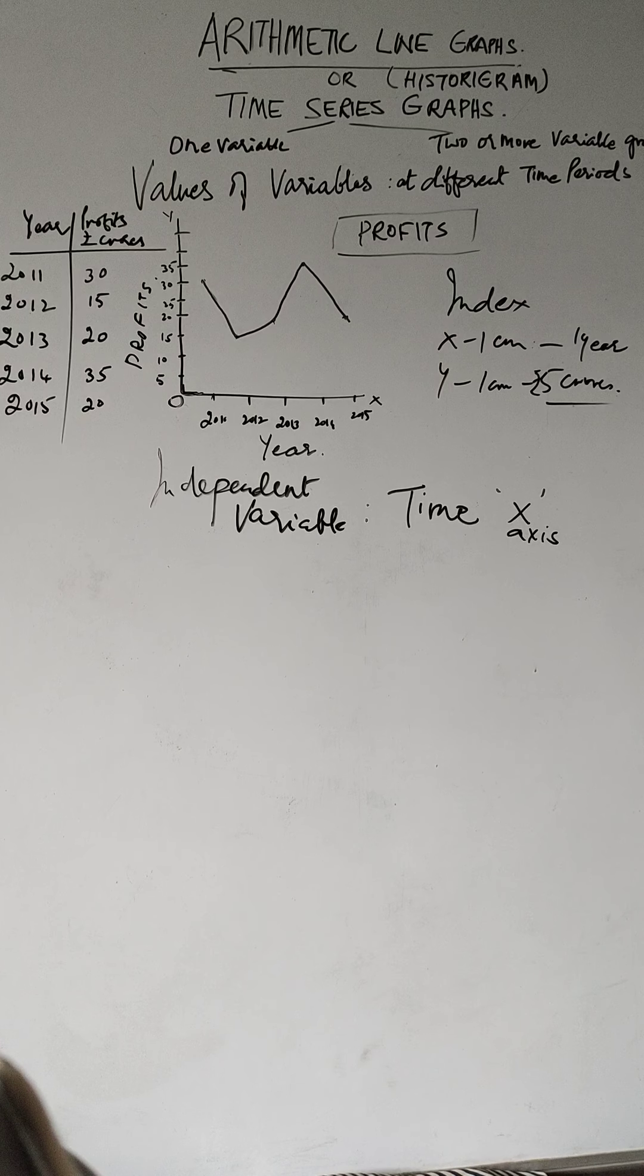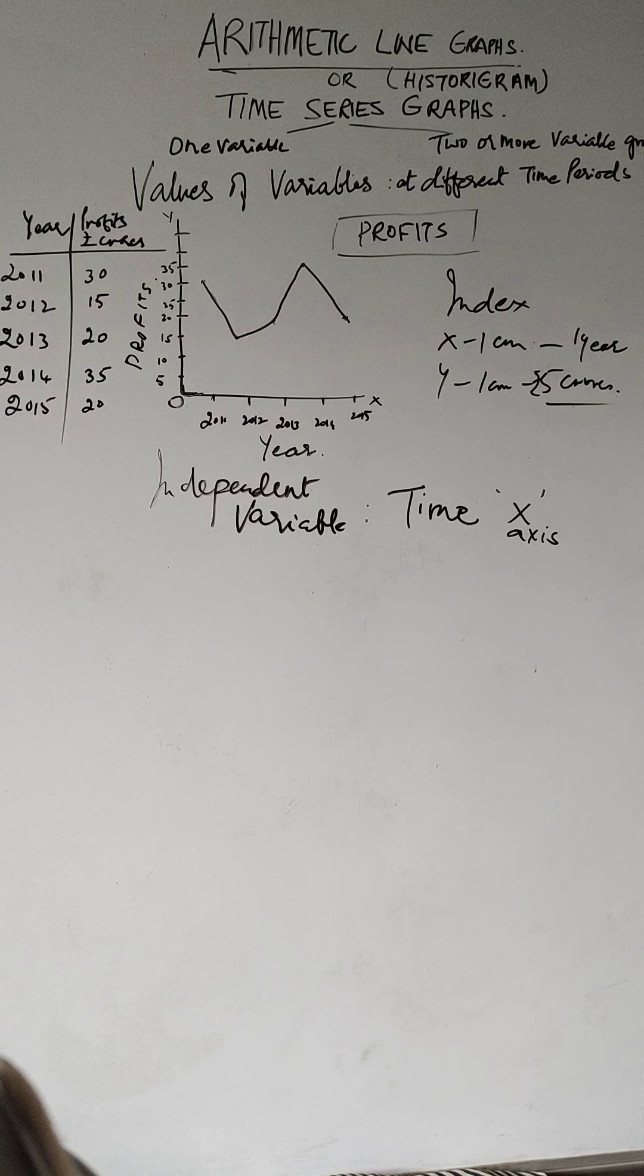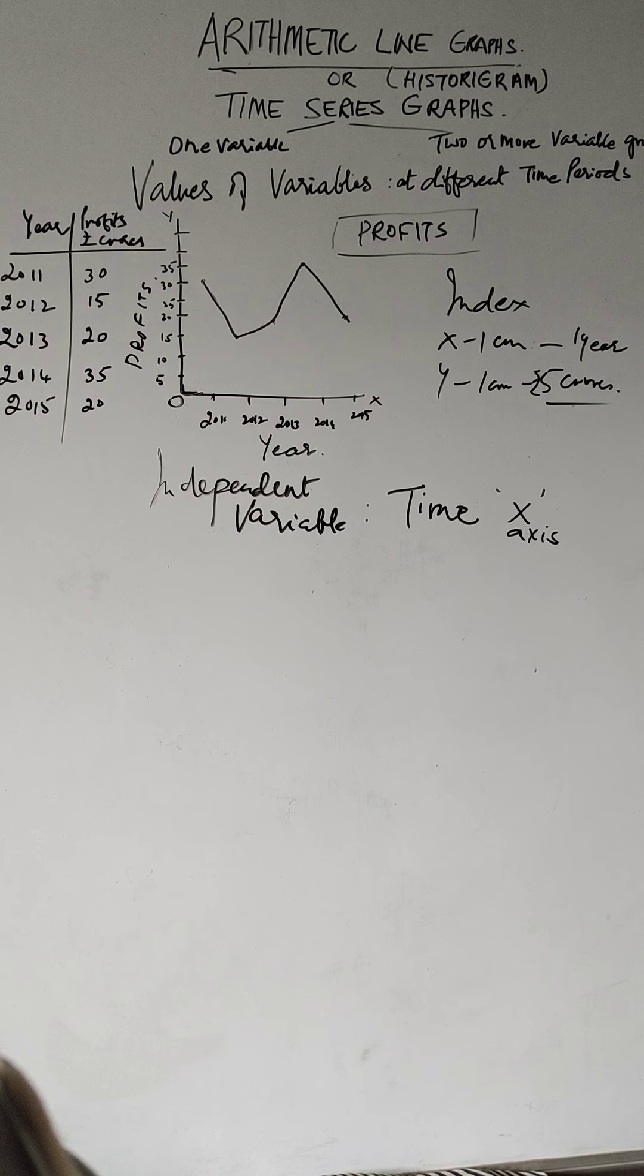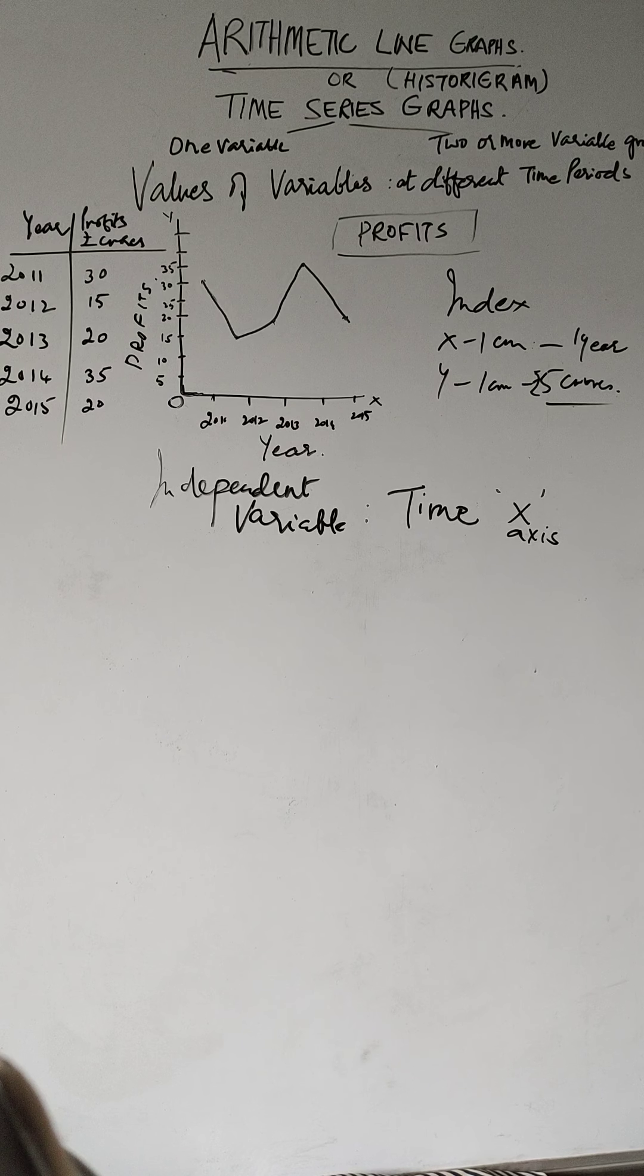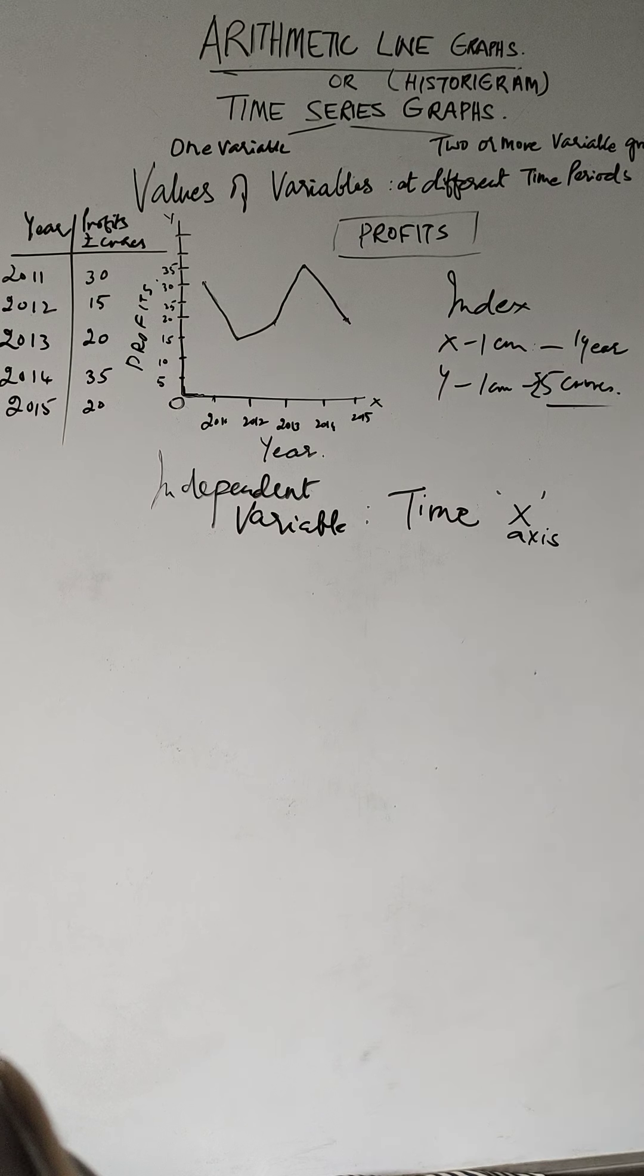The distance of the points from the baseline of the graph indicates the magnitude. We have seen this here. In the next class we are going to do two or more than variable graphs, two variable graphs we will do, and that will finish off our presentation.